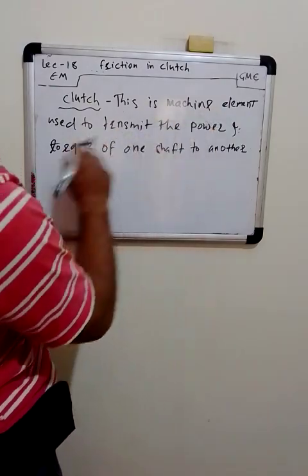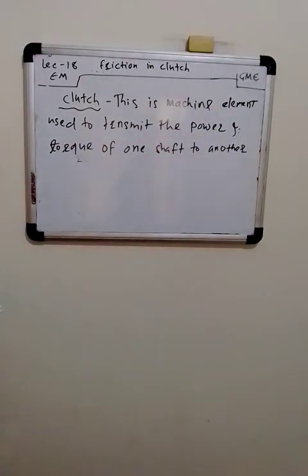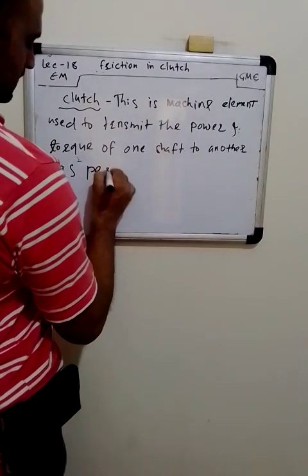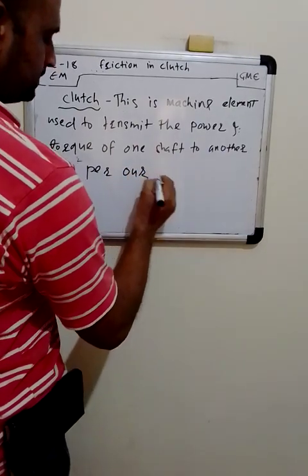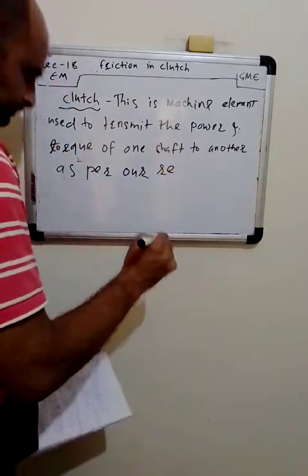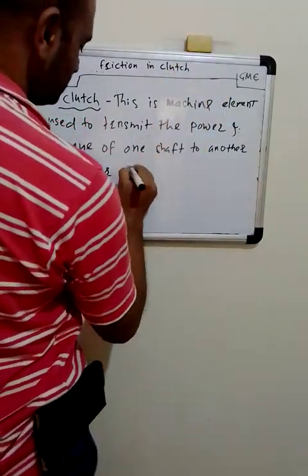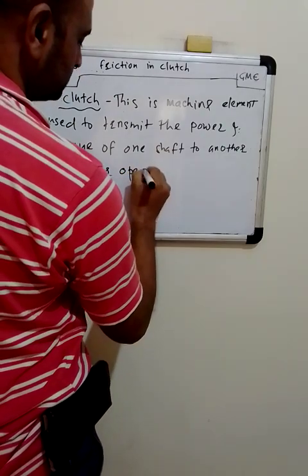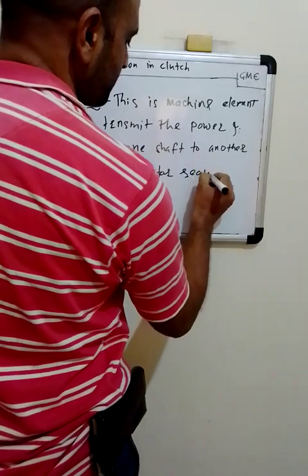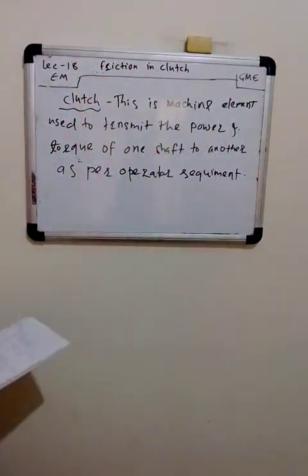This clutch is a machine element used to transmit the power and torque from one shaft to another, as per the operator's requirement. This is the definition of the clutch.